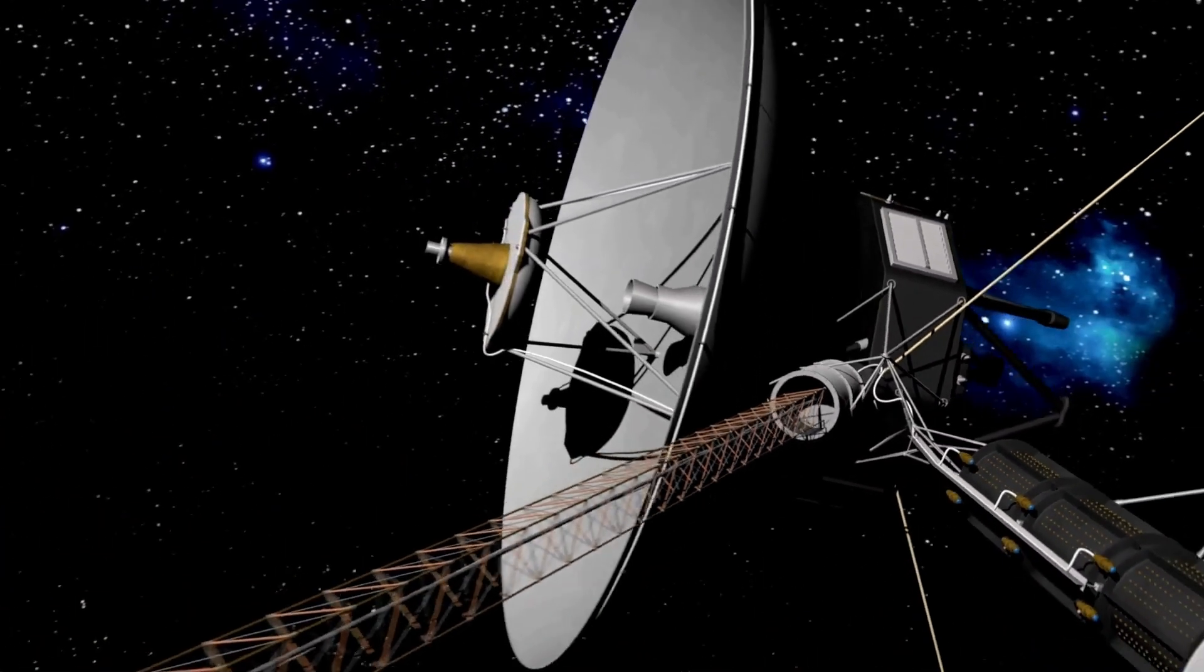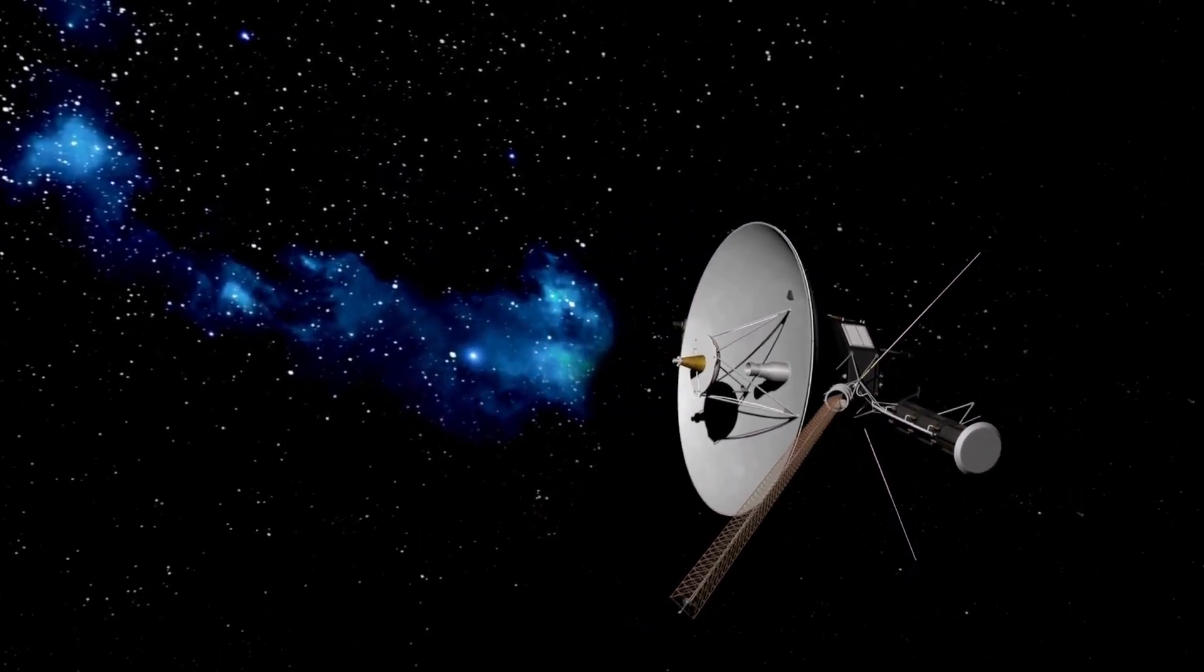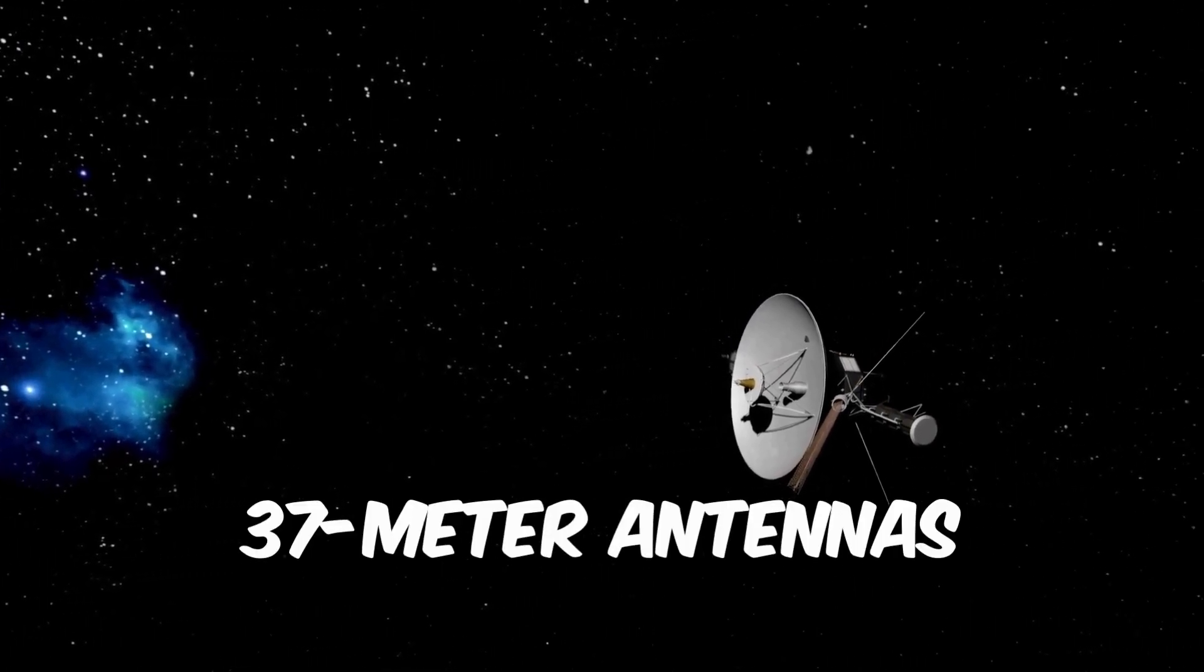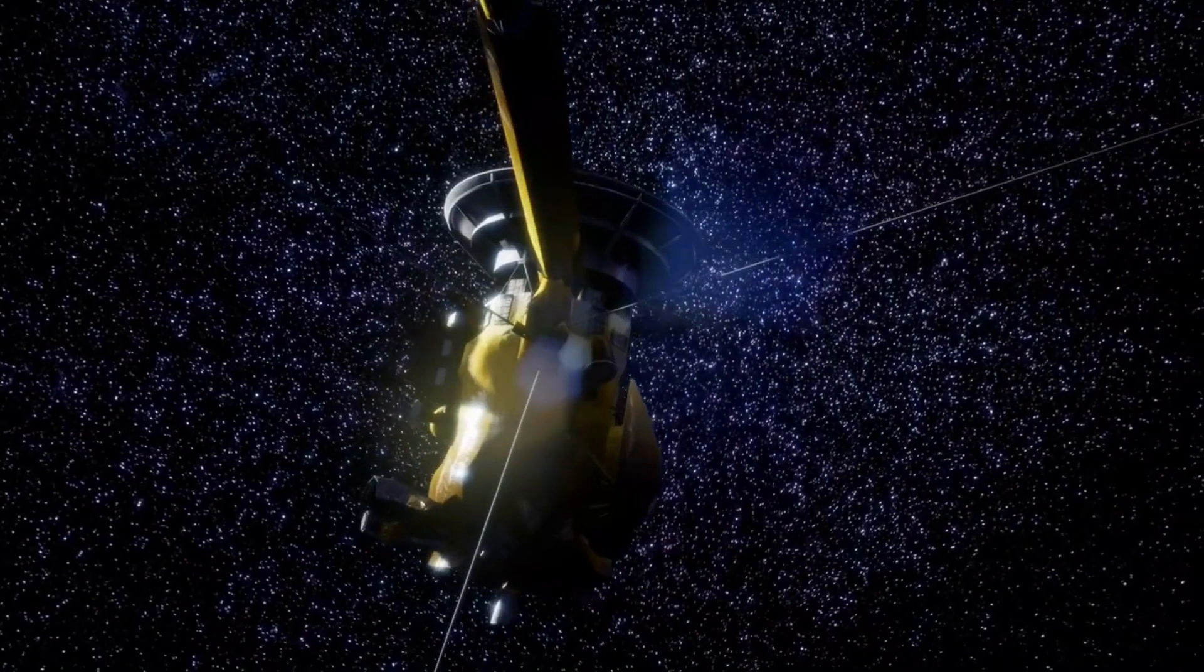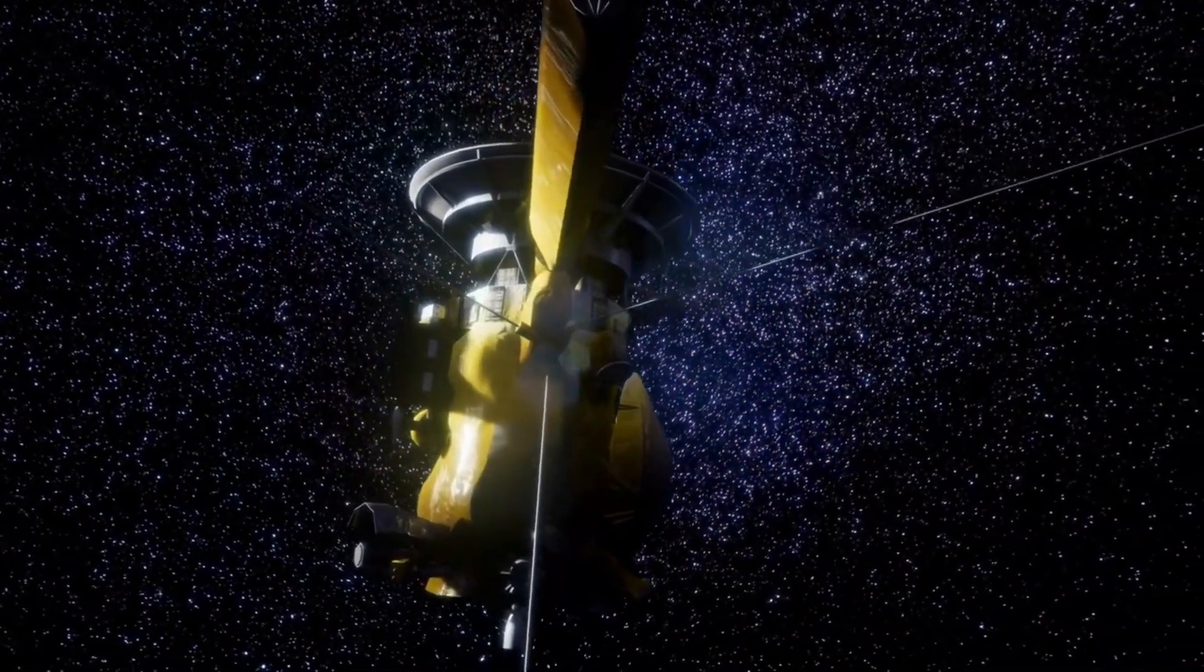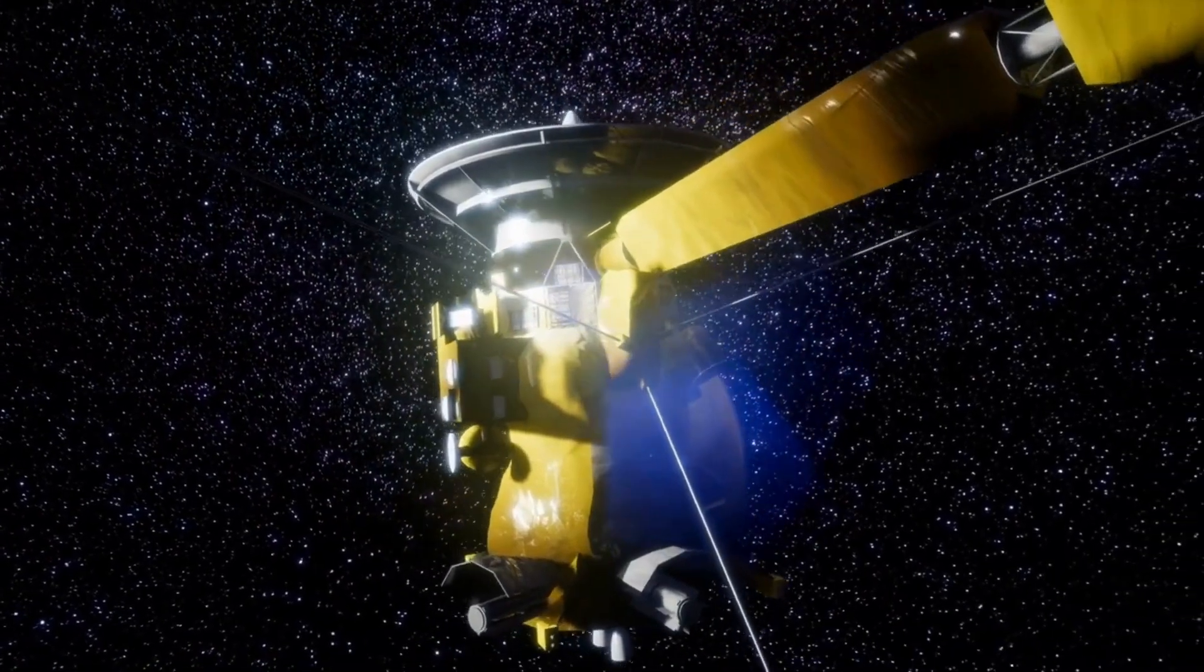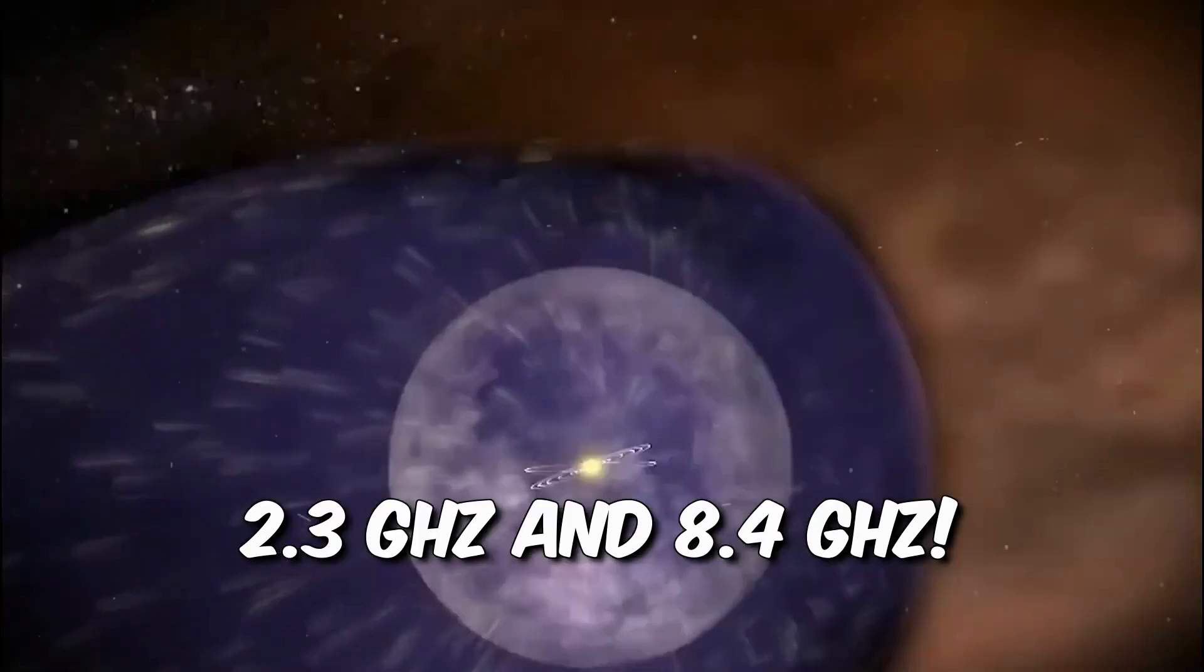Isn't Voyager 1 just mind-blowing? This incredible spacecraft uses NASA's Deep Space Network to chat with us here on Earth. Picture this. Massive 37-meter antennas, the size of a giant truck, helping Voyager 1 send and receive messages. We're talking super high-tech stuff, like data being zapped through the cosmos at 2.3 GHz and 8.4 GHz.